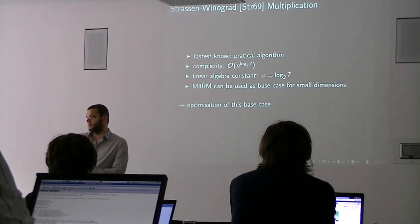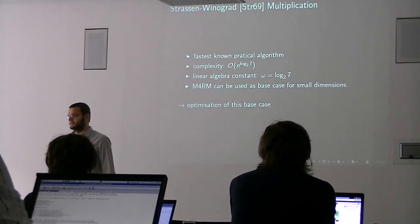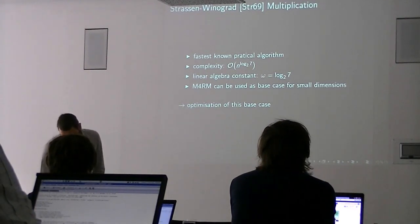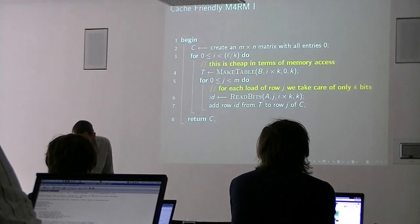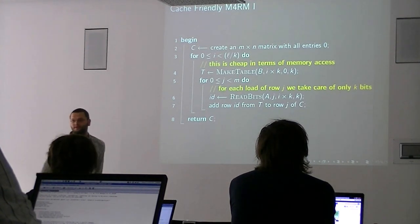Why this previous algorithm is still relevant is that at some point we want to cross over from the asymptotic fast technique to some base case which is very efficient, and in our case it's not the standard triple loop multiplication, but M4RM is the base case that we use for small dimensions. Writing the high level Strassen-Winograd is easy, and then optimizing this base case is what we spend quite a bit of time on.